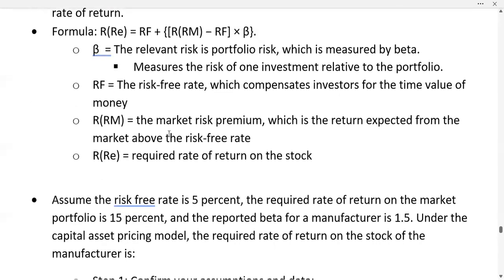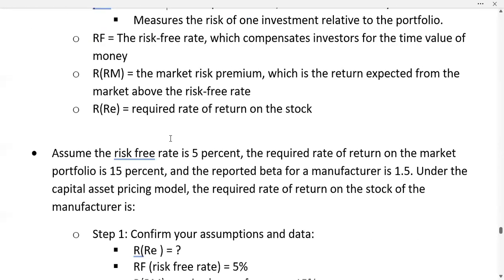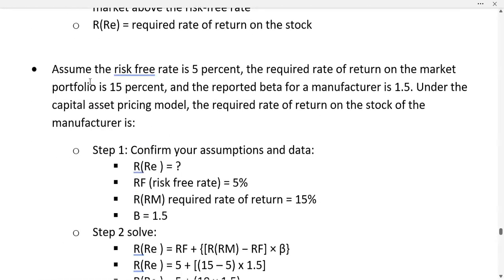Let's look at an example where we assume the risk-free rate is 5%, the required rate of return on the market portfolio is 15%, and the beta for a manufacturer is 1.5. Under the capital asset pricing model, the required rate of return on the stock for the manufacturer is...